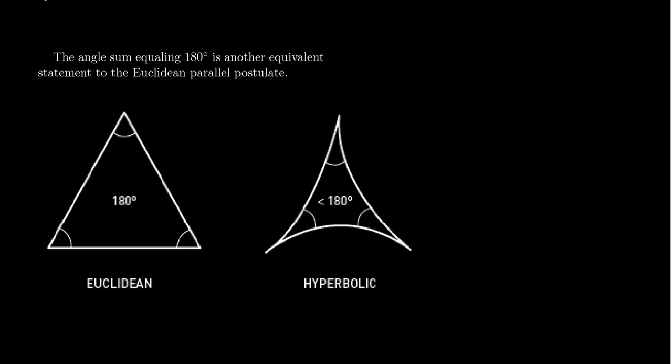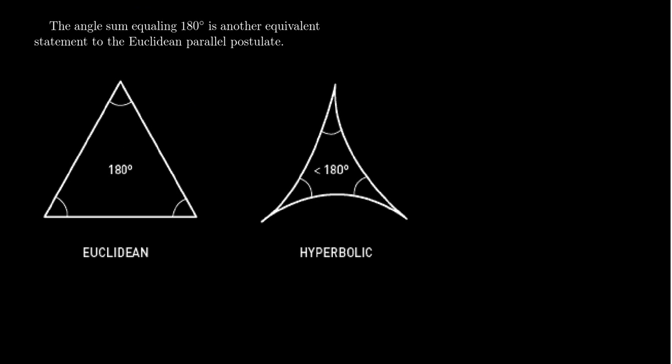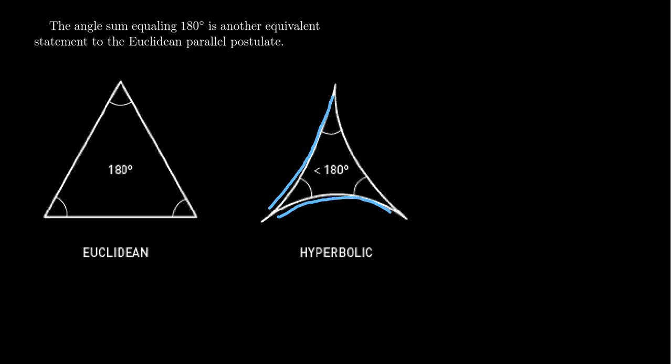Talking about angle measures, here's another property of non-Euclidean geometry. In Euclidean geometry, the sum of all three angles of a triangle equals 180 degrees — that's why the quadrilateral angle sum is 360, since a quadrilateral is just two triangles glued together. The 180-degree triangle angle sum is a Euclidean property. In hyperbolic geometry, because of the curvature — which curves inward toward the middle of the triangle — these angles will give you something strictly less than 180 degrees.